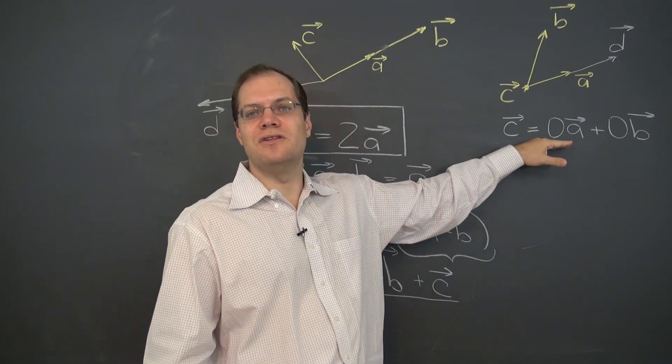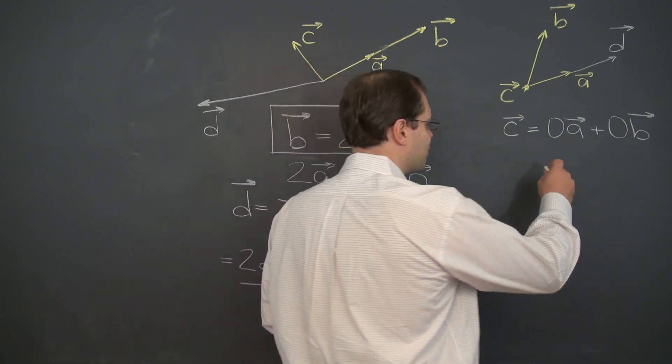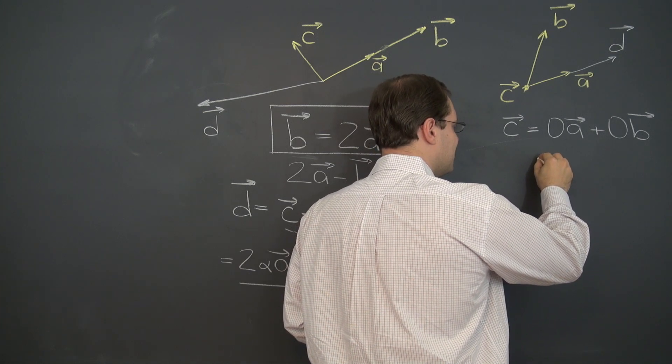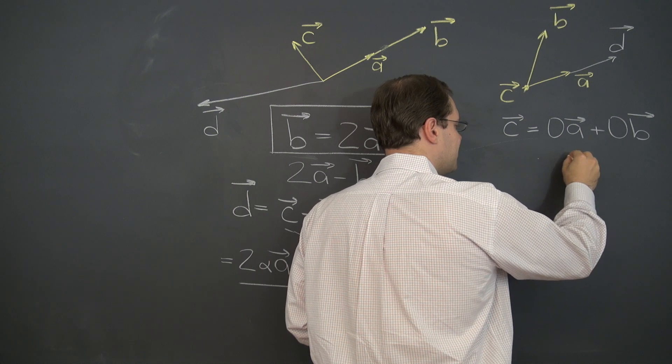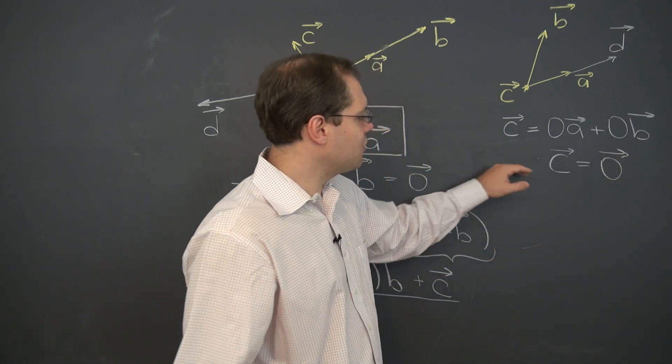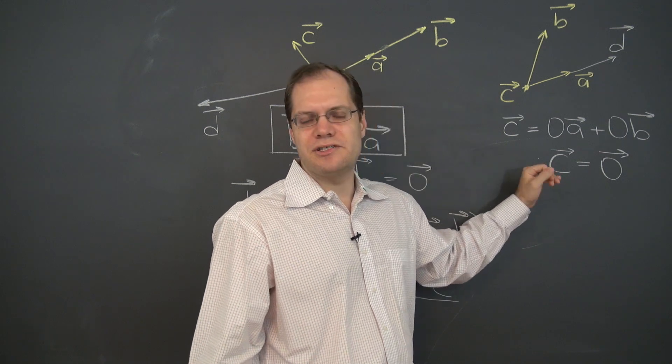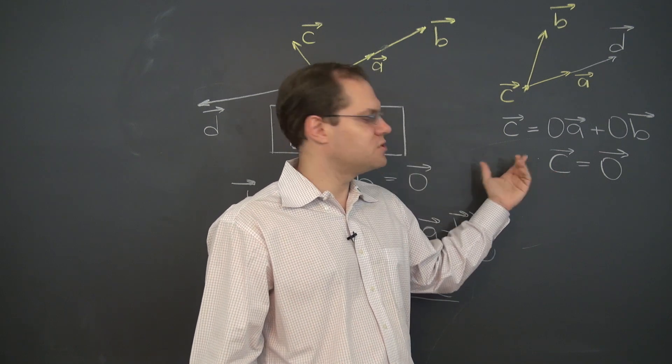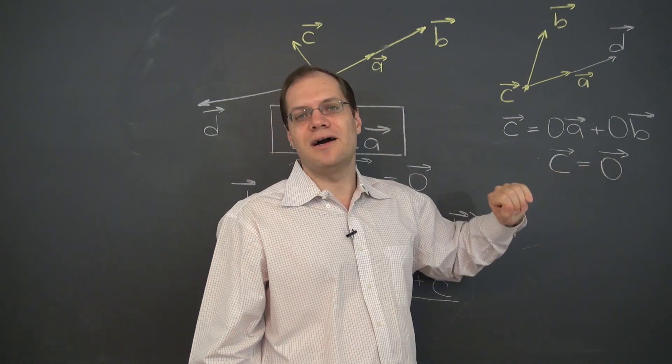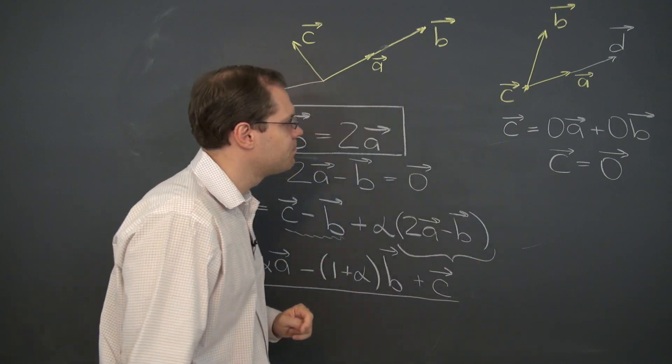Now let's convert this to a non-trivial linear combination that equals zero. And of course, we can write it in several different ways, but one that's deceptively simple is to just write c equals zero. We could have thrown in zero a plus zero b plus c equals zero, but there is no point. So here we have a non-trivial linear combination that equals zero. Why is it non-trivial? Because this coefficient right here is one. So it's not zero.